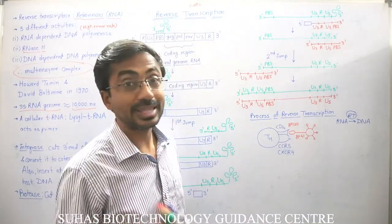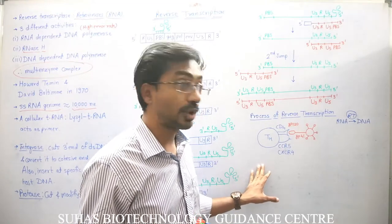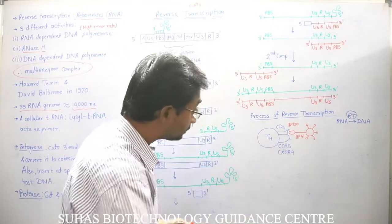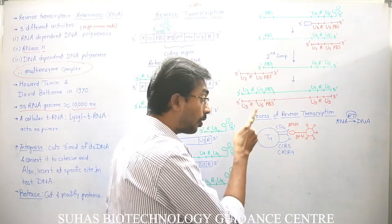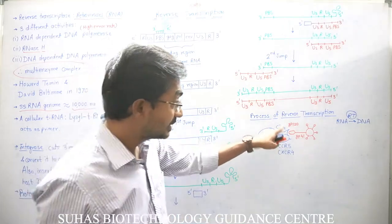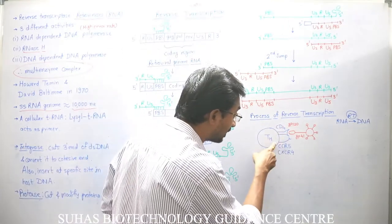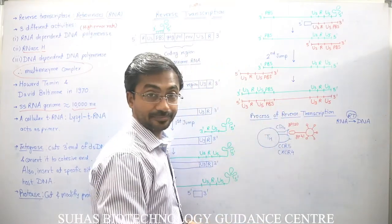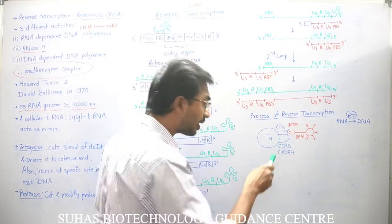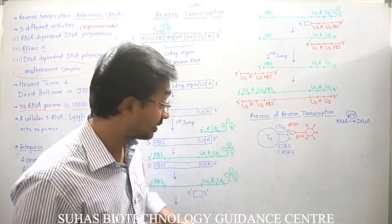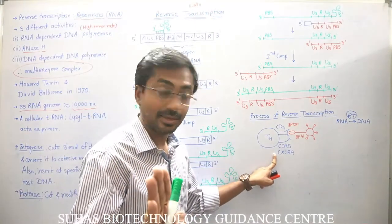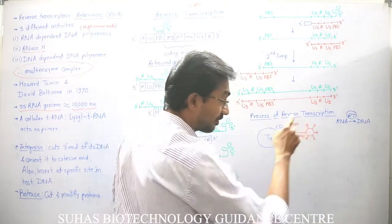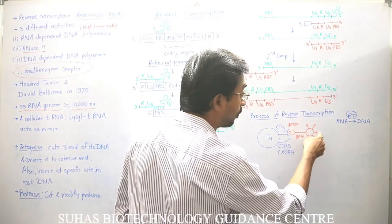Now let's see how HIV actually enters the cell and how reverse transcription helps HIV grow inside CD4-positive T helper lymphocytes. The T helper lymphocyte's identity is its CD4 receptors on its membrane. Along with CD4 receptors, co-receptors such as CCR5 or CXCR4 are also involved in HIV entry — these are the main ones, with CD4 being the most important.